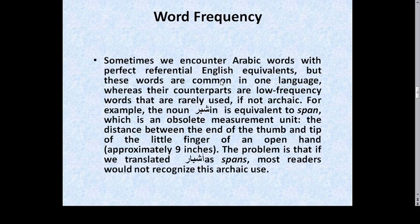Word Frequency: Sometimes we encounter Arabic words with perfect referential English equivalents, but these words are common in one language whereas their counterparts are low-frequency words that are rarely used, if not archaic. For example, the noun شبر (shibr) is equivalent to 'span,' which is an obsolete measurement unit — the distance between the end of the thumb and tip of the little finger of an open hand, approximately 9 inches. The problem is that if we translate خمسة أشبار as 'five spans,' most readers would not recognize this archaic term.